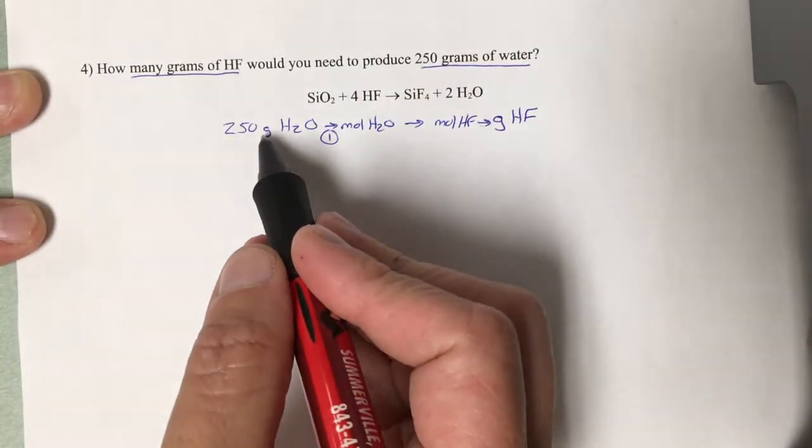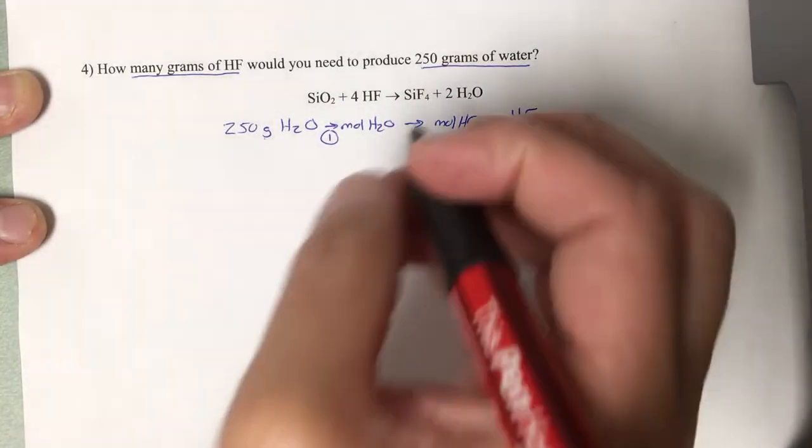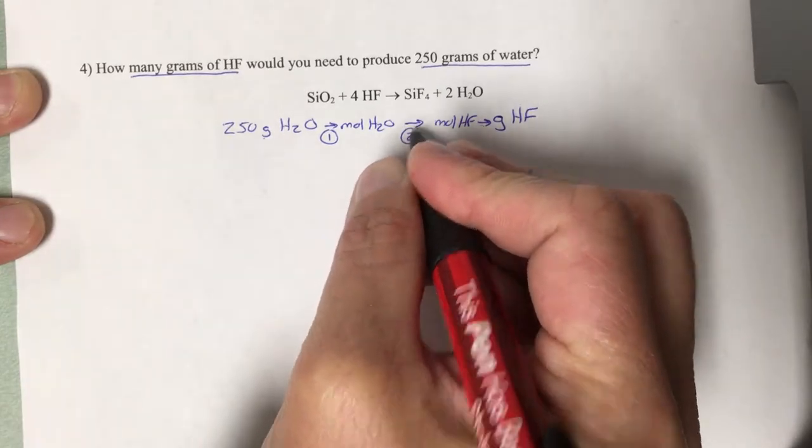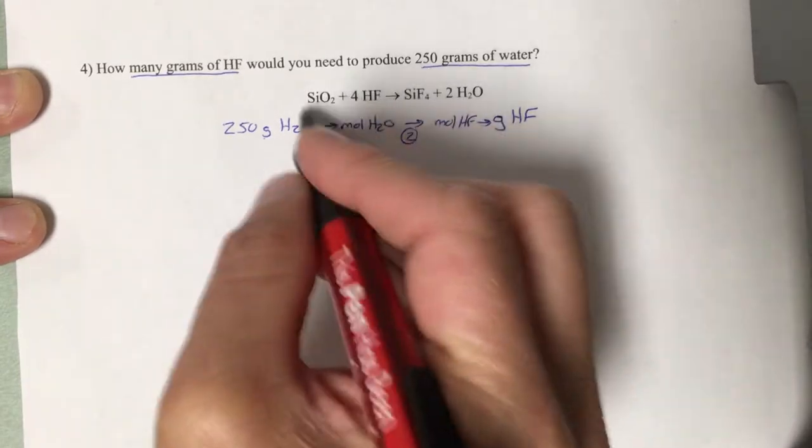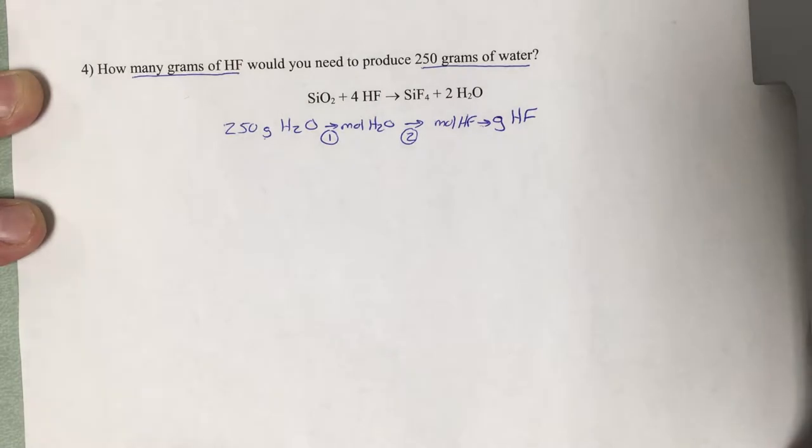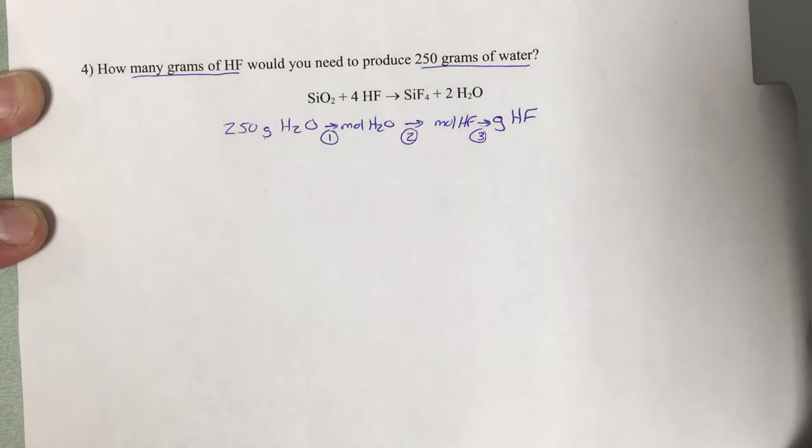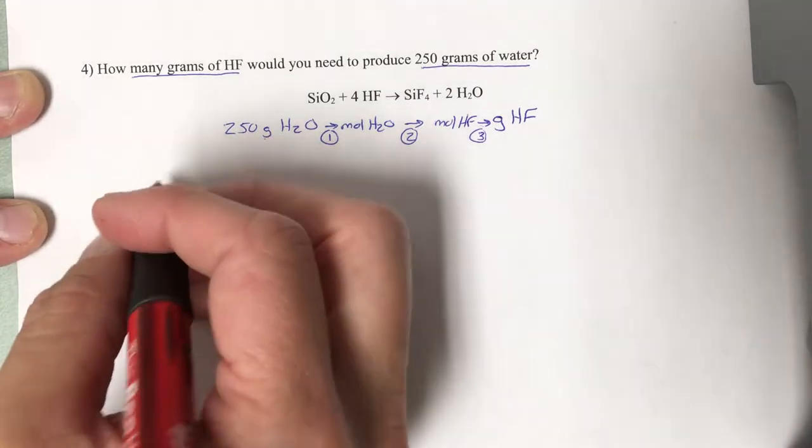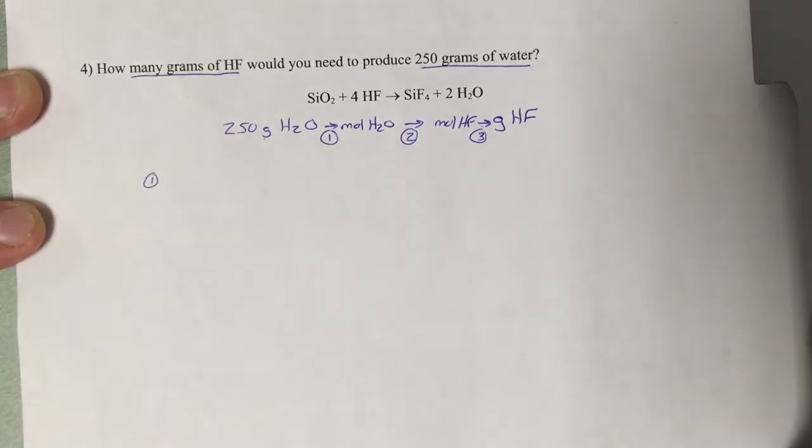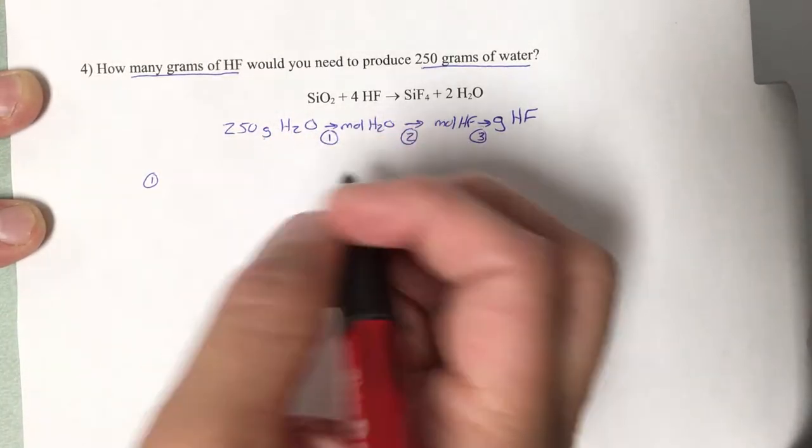The first step will be going from grams of water to moles of water. The second step will be going from moles of water to moles of hydrogen fluoride using that balanced equation. My third step will be going from moles of hydrogen fluoride to grams of hydrogen fluoride. Let's get started.